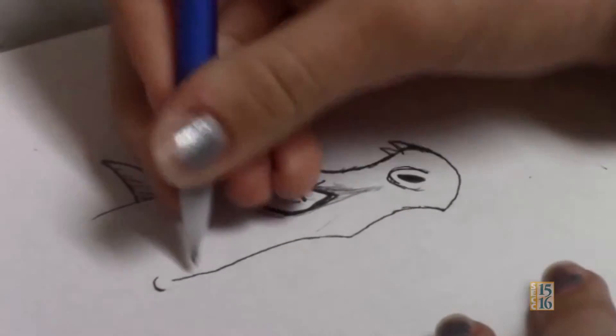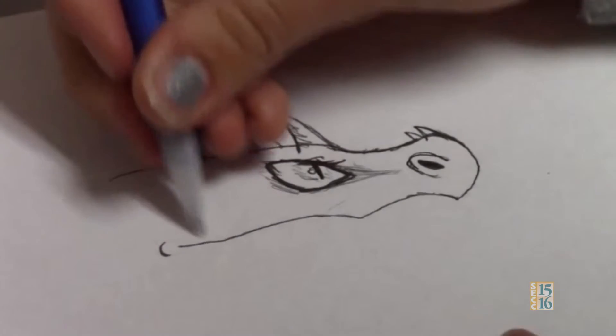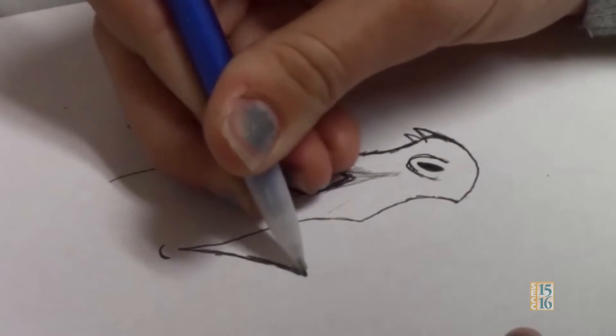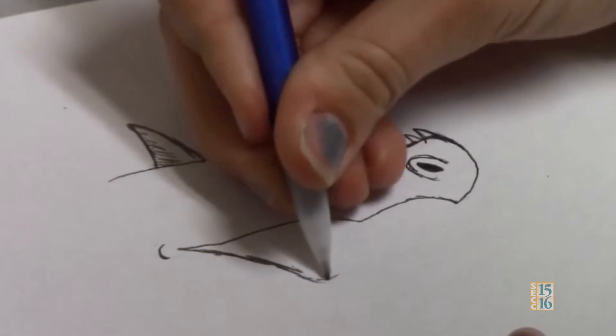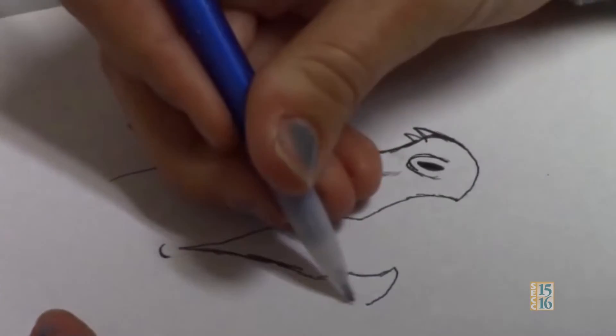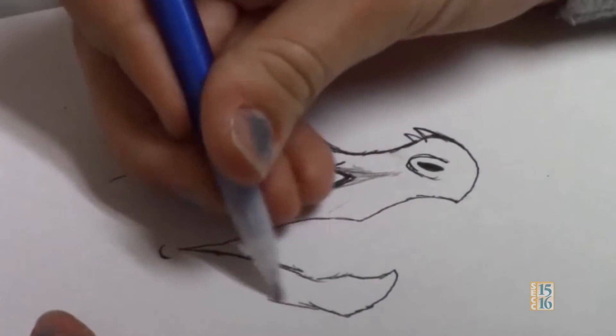And then if you want the mouth open, you just do this. You curve it so it doesn't look like it's a flat mouth. And like that. And then curve down again and do that.